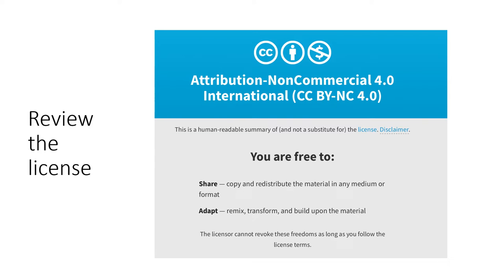The next step, and this is very important, is to review the license on the open access textbook. The open access textbook that I used had an attribution non-commercial international license that allowed me to share and adapt the content. I was allowed to copy and redistribute the material in any medium or format, and I was allowed to adapt it, to remix it, transform, and build upon the material. If it has that license — the CC BY-NC — then you know that you can do the same.